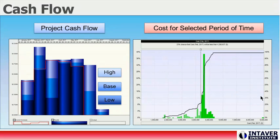Because February shows a large jump in expected cash flow, we can take a look at a detailed view of the probabilistic cash flow for that particular period. The large spike on the right is due to the probability of a critical risk occurring.